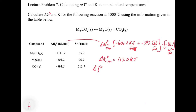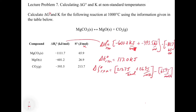Now for delta S naught of reaction — again products minus reactants. We take 213.7 joules per mole Kelvin for CO2, plus 26.9 joules per mole Kelvin, then subtract the reactant value of 65.9 joules per mole Kelvin. Note: the units should be joules per mole Kelvin. That gives us delta S naught equal to 174.7 joules per mole Kelvin.